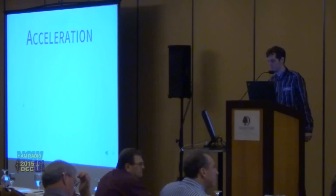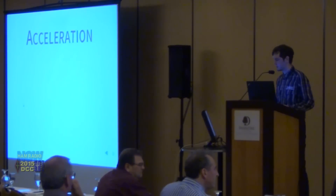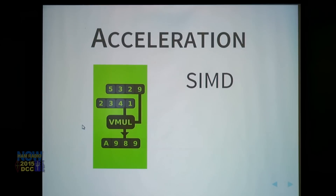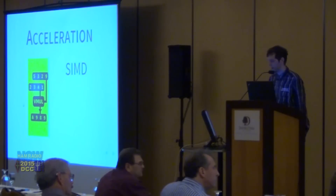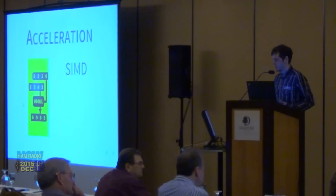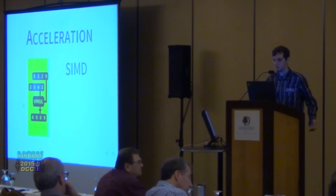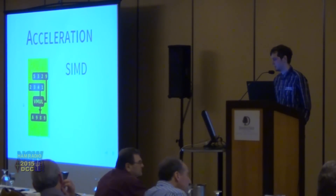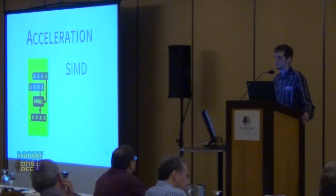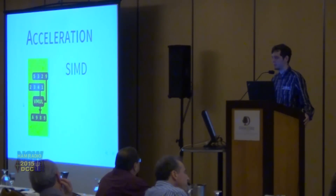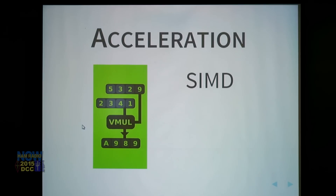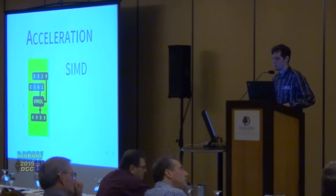Let's look at acceleration methods for an SDR system. One common approach is SIMD — Single Instruction Multiple Data — extensions to the CPU's instruction set. Instead of an instruction to add two floating-point numbers in registers, we now have instructions to add a quad-register of four floating-point numbers to another quad-register of four floating-point numbers and store the result — doing four additions in parallel. This is already in modern CPUs.